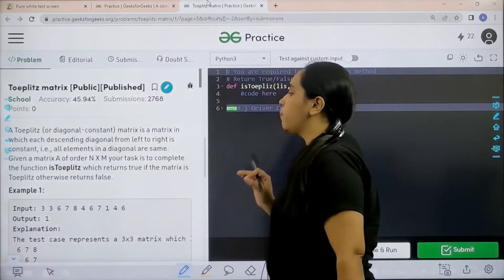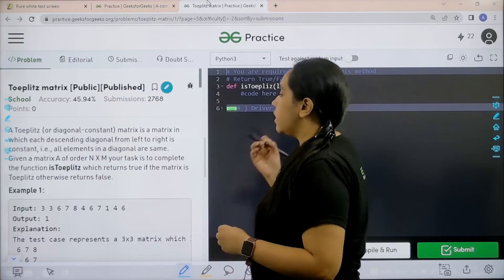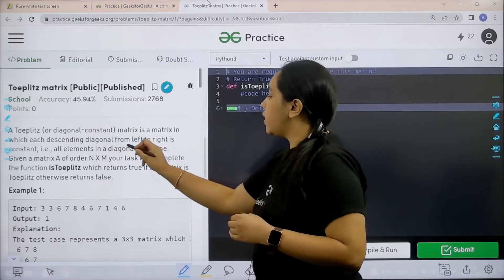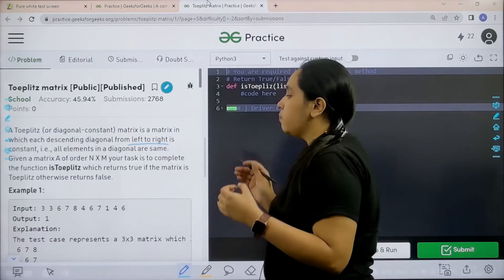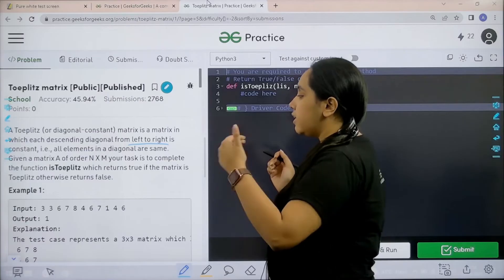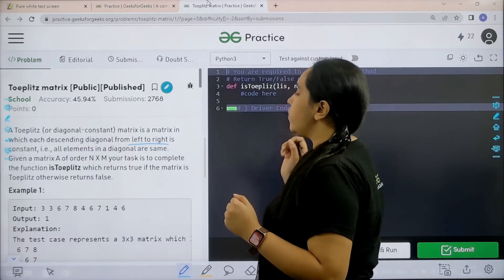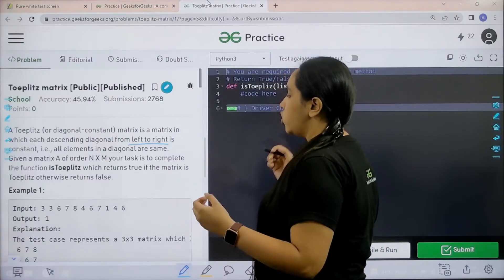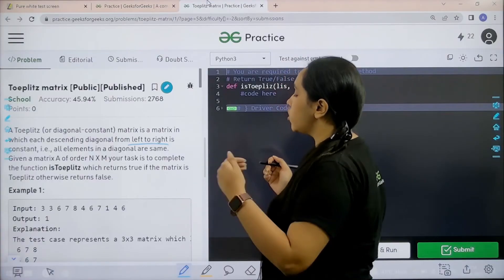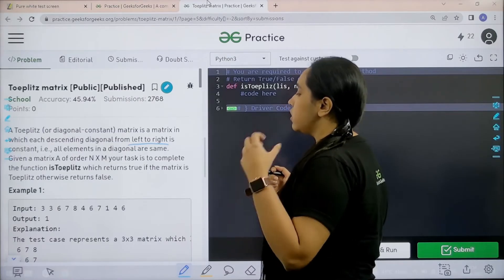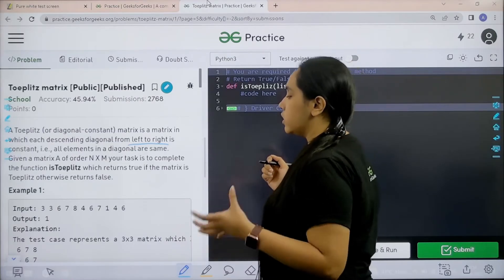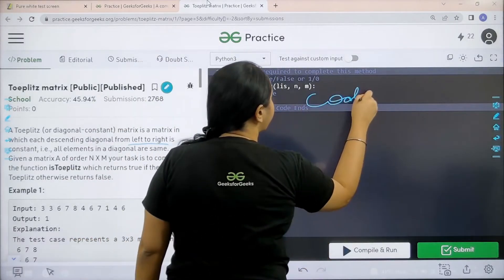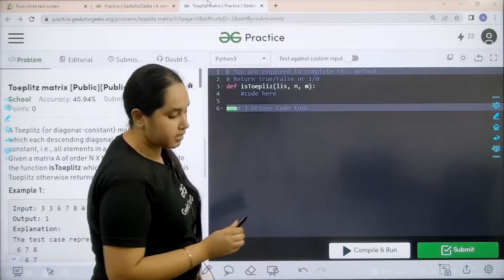Let's read the question first. A Toeplitz or a diagonal constant matrix is a matrix in which each descending diagonal from left to right is constant. All elements in a diagonal are same. Given a matrix A of order n into m your task is to complete the function is Toeplitz which returns true if the matrix is Toeplitz otherwise returns false. So I hope the question is clear to you and we would be coding it over here. So let's start.